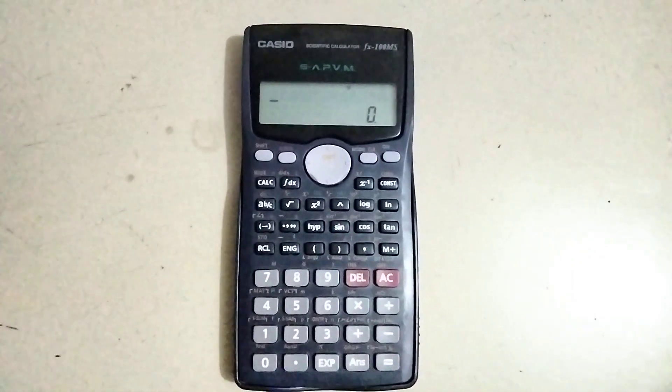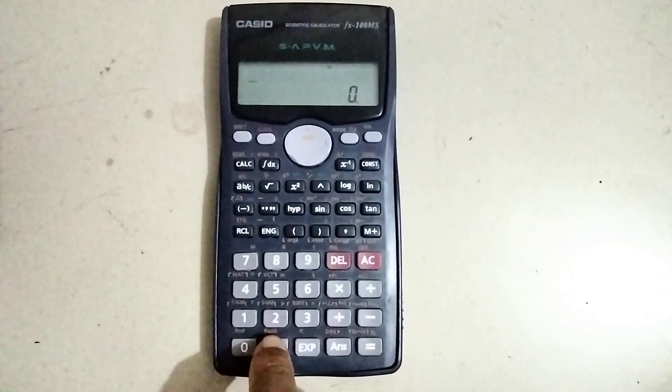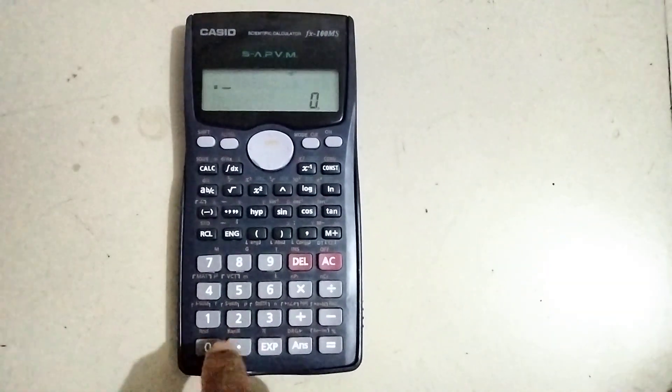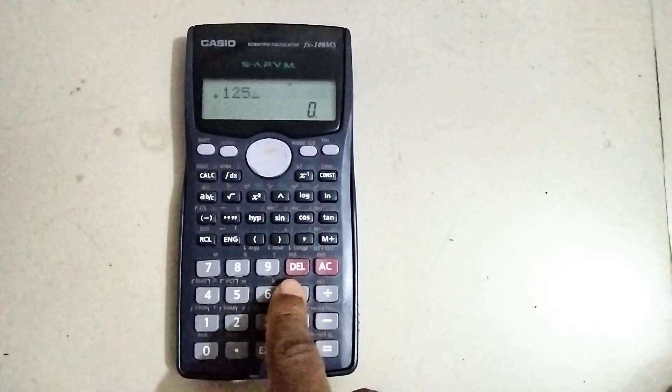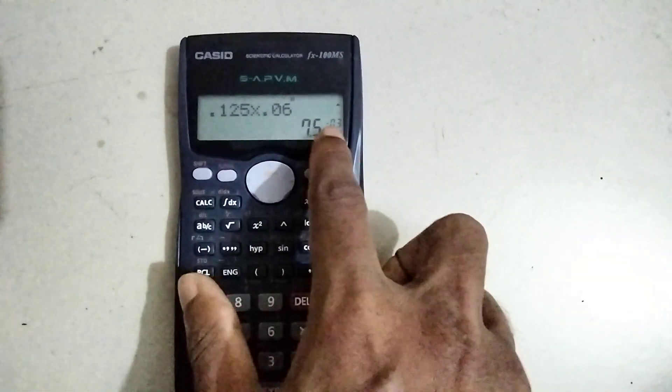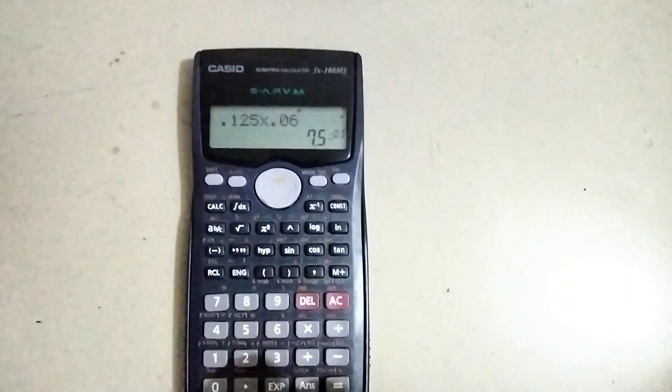Hey guys, welcome to this short video. Today I'm going to talk about how to remove the negative exponent from your calculator. For example, we have 0.125 times 0.06, and we have this negative exponent showing. So how can we remove this?